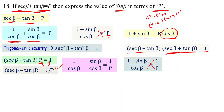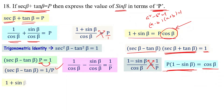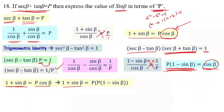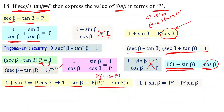By cross multiplication: p into 1 minus sin beta equal to cos beta. So cos beta equals p into 1 minus sin beta. Substituting this into the earlier equation 1 plus sin beta equal to p times cos beta, we replace cos beta with p into 1 minus sin beta, giving: 1 plus sin beta equal to p squared into 1 minus sin beta, which expands to 1 plus sin beta equal to p squared minus p squared sin beta.